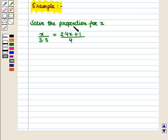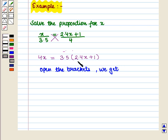Suppose we have to solve the proportion for x and that is x/3.5 = (2.4x+1)/4. So first we will cross multiply it and we get 4x = 3.5(2.4x+1). Now we shall open the brackets and we get 4x = 3.5(2.4x) that is 8.4x plus 3.5(1) that is 3.5.